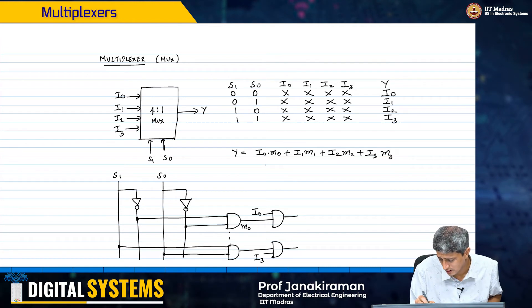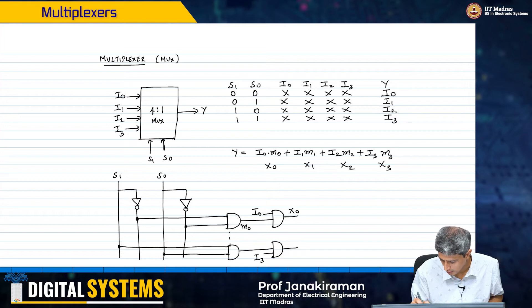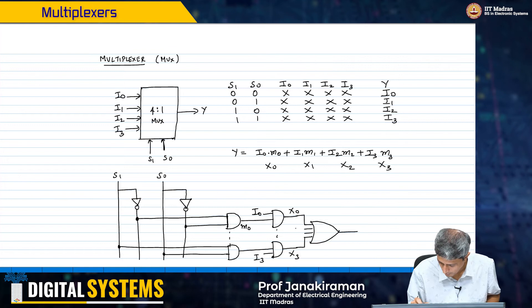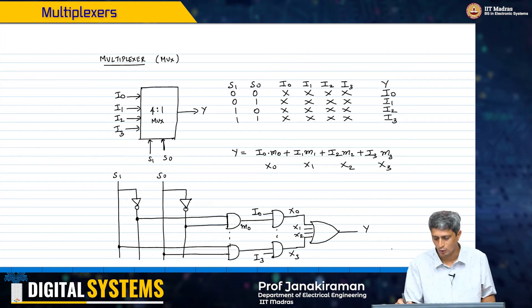Let me call this as some x0, x1, x2 and x3. Out here I will get x0, I will get x3. Then eventually I need to put them through an OR gate because I have the sum of products that I want. From here you will get x1, then x2 and eventually I will get my multiplexer output y out here. This is y mux.